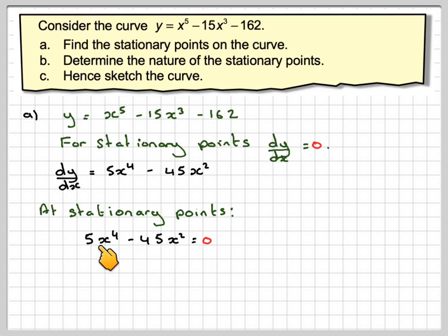We need to solve this equation. The highest common factor is 5x squared, so we'll take that out and we're left with x squared minus 9 equals 0. This is the difference of two squares, so this becomes 5x^2 times (x + 3) times (x - 3) equals 0. Therefore, x can be 0, or x equals minus 3, or x equals 3 from each of those brackets.